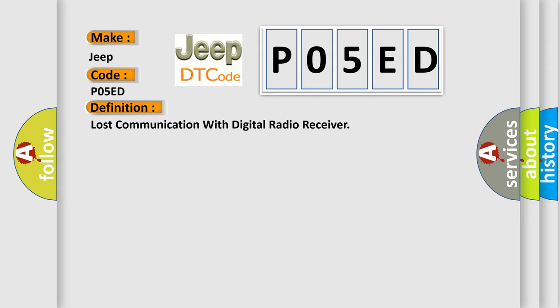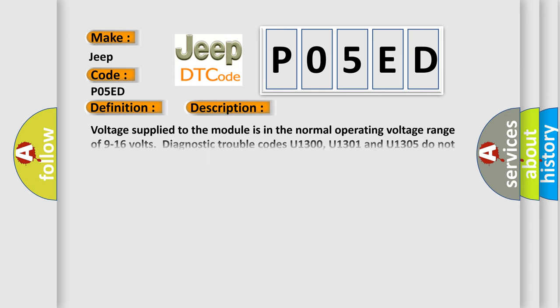And now this is a short description of this DTC code. Voltage supply to the module is in the normal operating voltage range of 9 to 16 volts. Diagnostic trouble codes U1300, U1301, and U1305 do not have a current status. The vehicle power mode, ignition switch position, requires serial data communication.